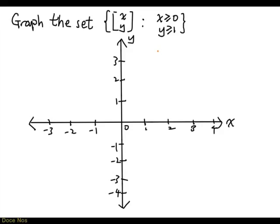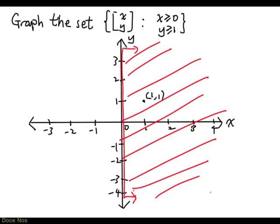Now let's look at all the points with x greater than 0 and see where they are. If you look at this point right here, this point is (1,1). It definitely has an x-coordinate greater than 0. And in fact, anything over on this side of the y-axis, while including those points on the y-axis, will have x greater than 0. These are all the points with x greater than 0.